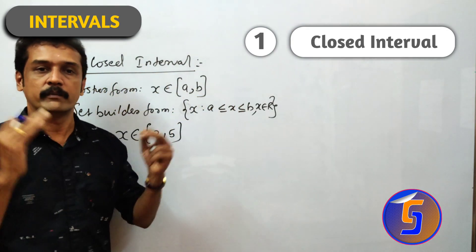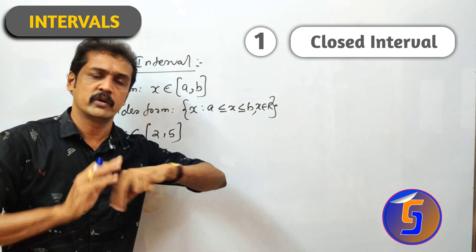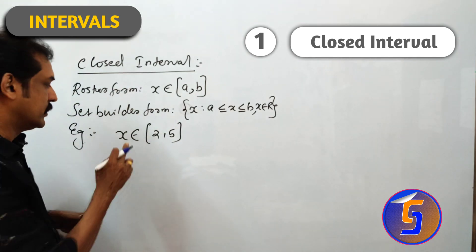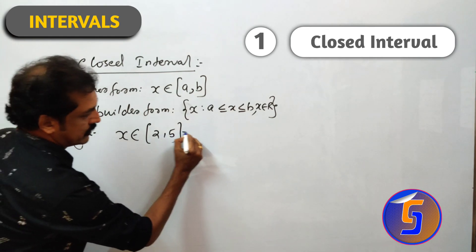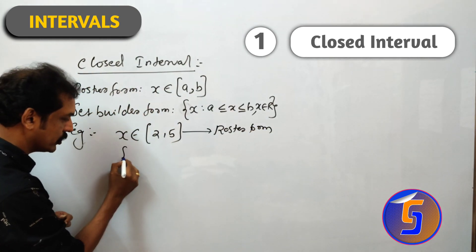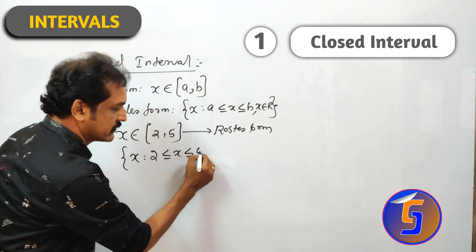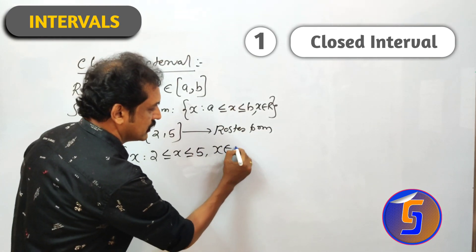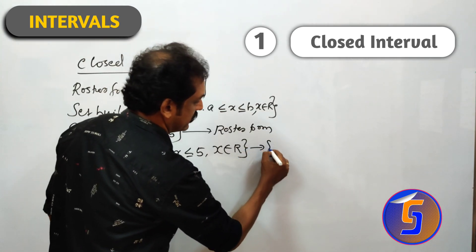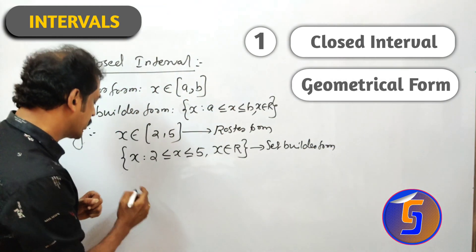So 2 and 5 are included, along with values like 2.1, 2.01, 3.1, and all values up to 5. This is the roster form. The set-builder form is: set of all x such that 2 ≤ x ≤ 5, x element of R.